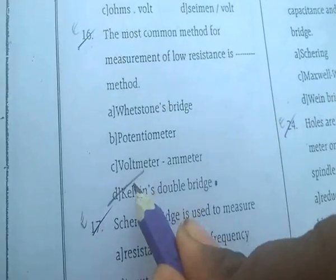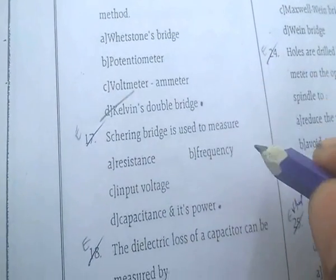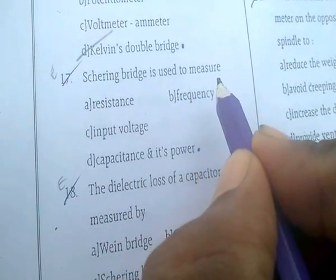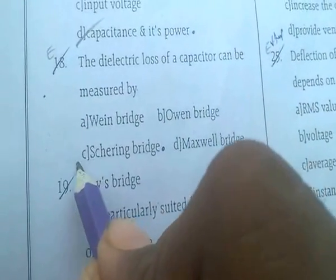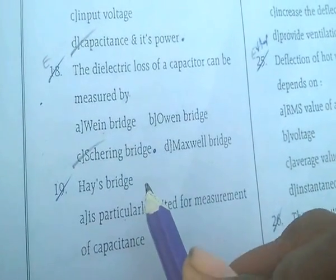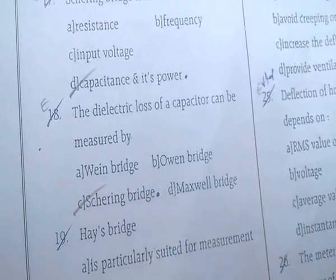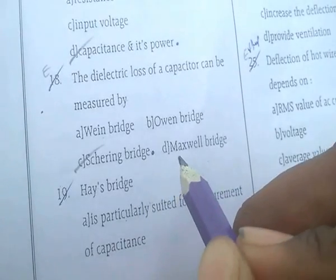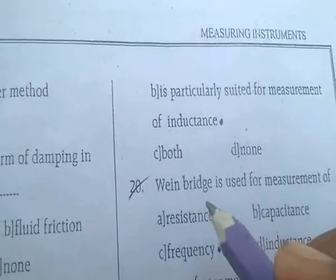The most common method for measurement of low resistance is the Kelvin double bridge. The Schering bridge is used to measure capacitance and dielectric loss of a capacitor. The Hay bridge is used for inductance measurement.